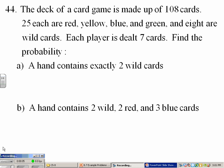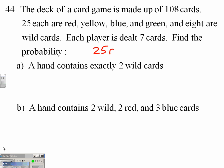Okay, here's some pretty nice combinatoric probability problems, as it turns out. Let's take a look. The deck of a card game is made up of 108 cards: 25 red, 25 yellow, 25 blue, 25 green, and 8 wild cards. Each player is dealt 7 cards. Find the probability that a hand contains exactly 2 wild cards.